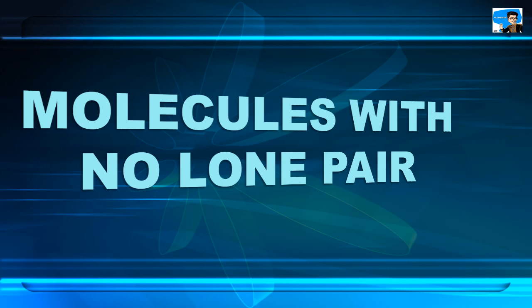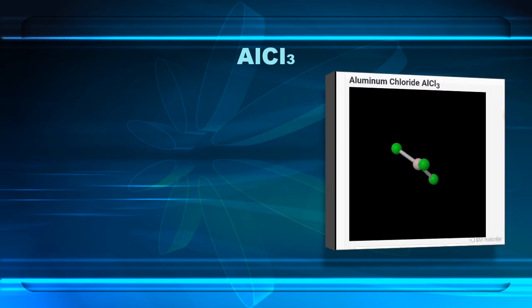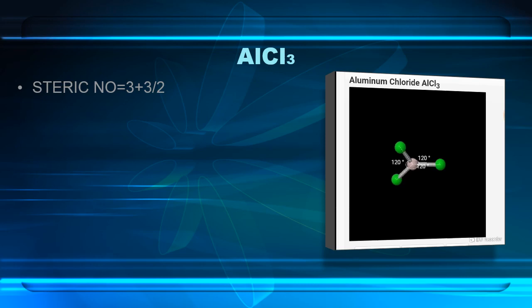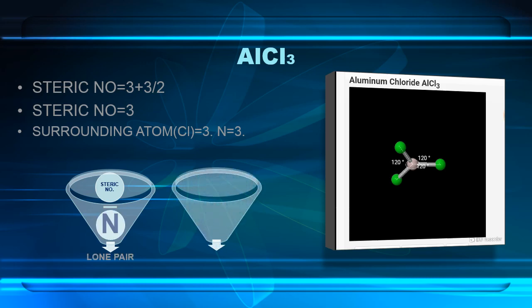Now it's time to work on numericals. First, we will take examples of molecules with no lone pair. Let us start with AlCl3, that is aluminum chloride. The steric number is 3 — calculated by adding the valence electrons of aluminum with the number of monovalent atoms present, all divided by 2: (3 + 3) / 2 = 3. By the formula, steric number minus n: 3 minus 3 equals 0. Aluminum chloride has no lone pair.